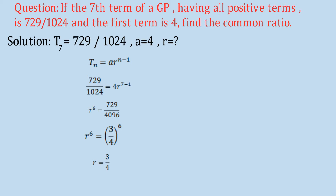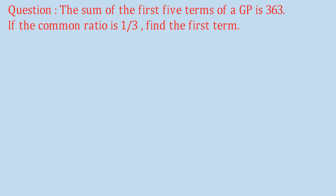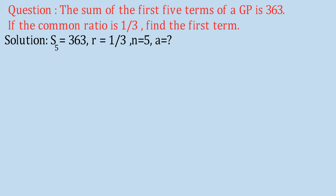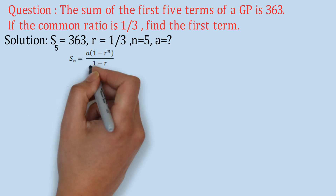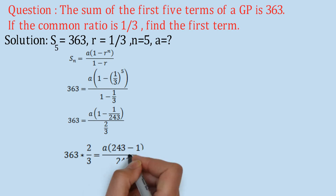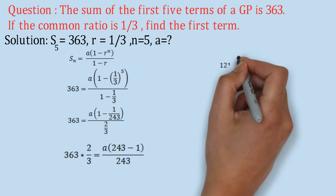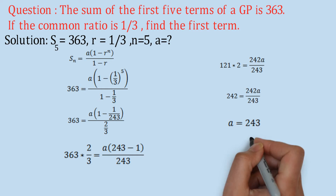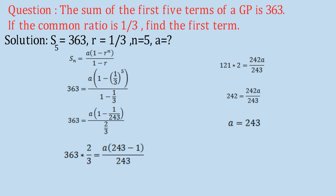Next question: The sum of the first 5 terms of a GP is 363 and the common ratio is 1/3. Find the first term. Given: S5 = 363, R = 1/3, N = 5. Since R is less than 1, we use Sn = A × (1 − R^n) / (1 − R). Substituting values and solving, we get 242 = 242A/243, so the first term A = 243.